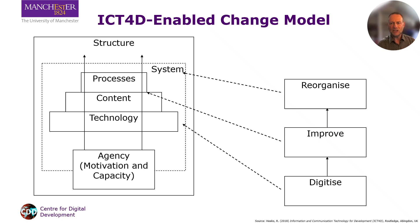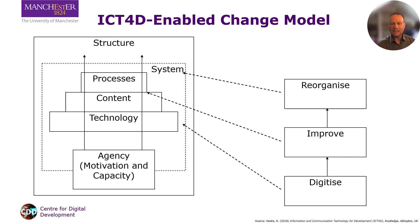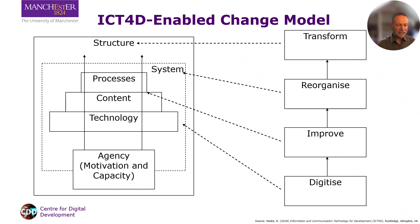The third level of change is reorganisation, in which change is made to the overall system — for example, adopting a different kind of process. An ICT4D example could be a subsistence farmer using a mobile phone to start selling their crops in the market for the first time, or a farmer using ICTs to make the transition from just selling in their local market to being integrated into an export supply chain.